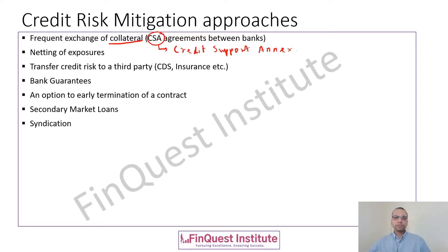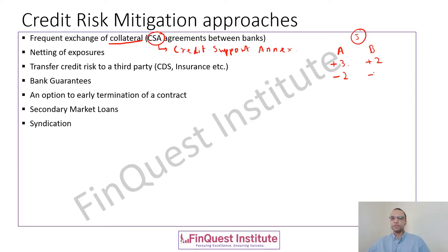Next is netting of exposures. When we talk of exposure management there are two ways of doing it — you can either have grossing or netting of exposures. Let's say there are five trades with a certain counterparty: I am counterparty A and I have five transactions with counterparty B. Out of these, three transactions I am in the money and two transactions I am out of the money. Likewise, two transactions B is in the money and three they are out of the money. This first scenario is called grossing of exposures or the gross exposure technique.